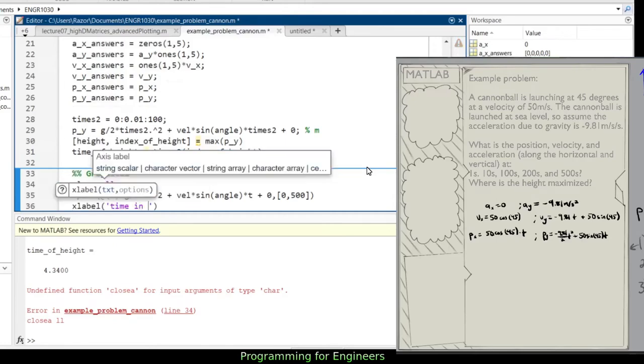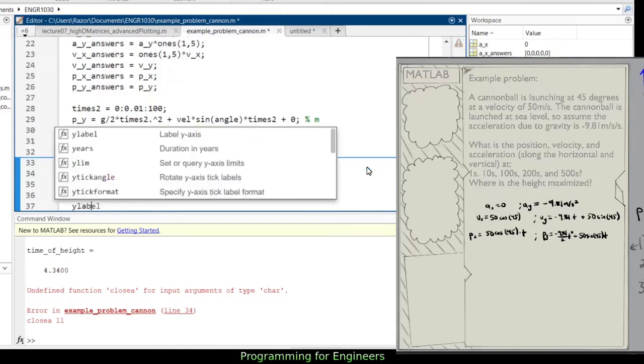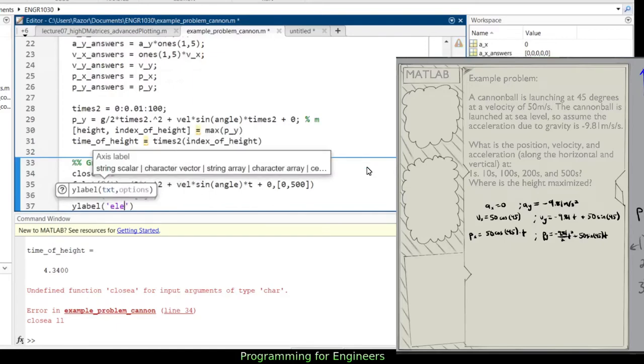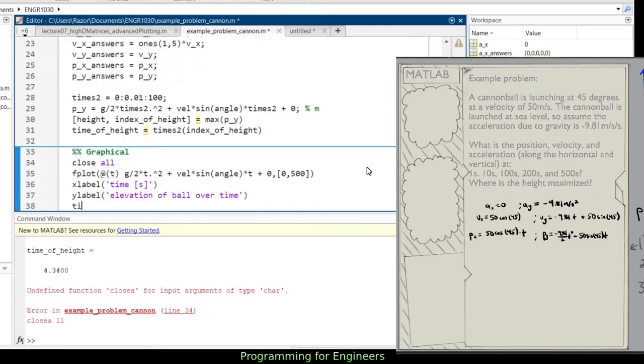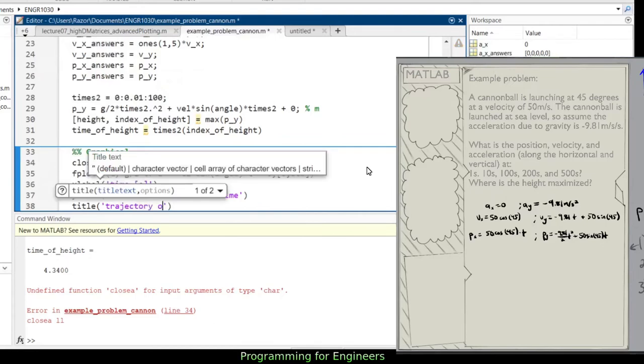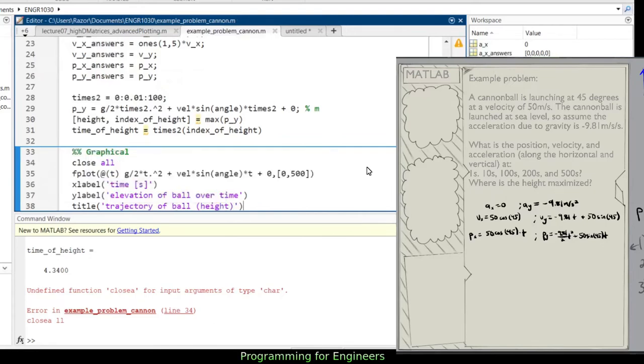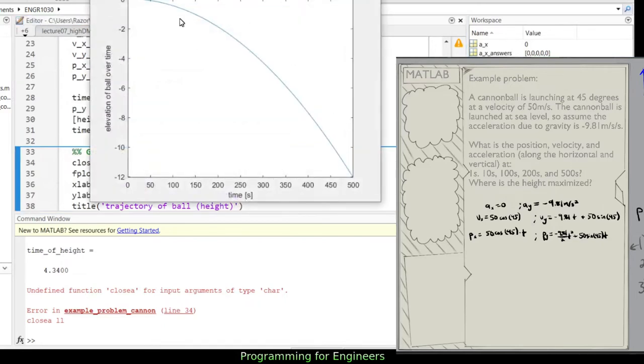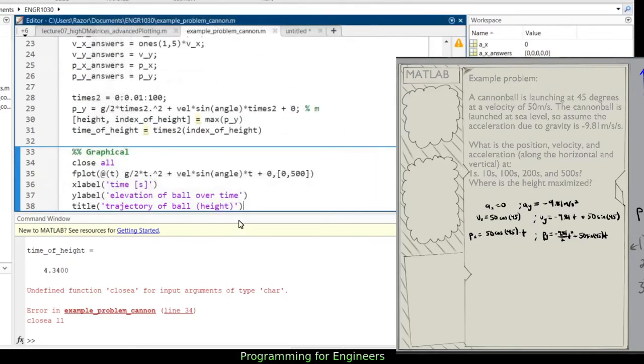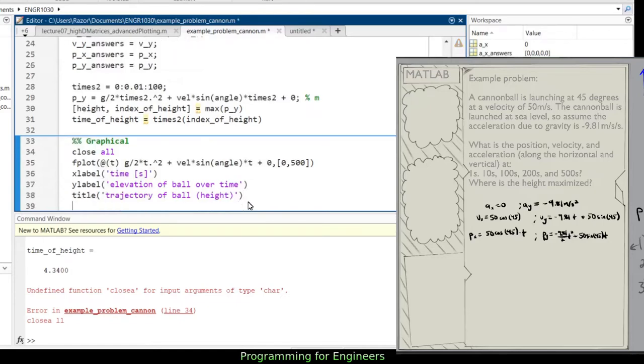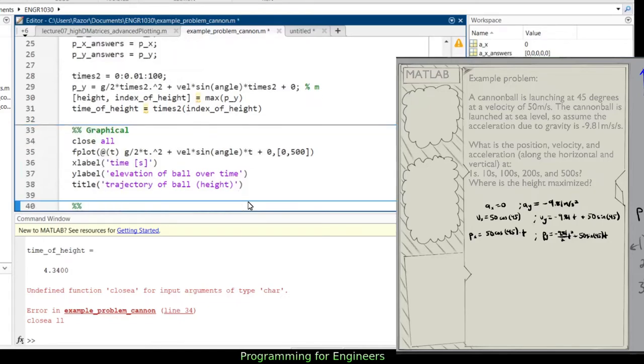So there we go, we have the trajectory from 0 to 500 seconds. So of course, xlabel, this would be time in seconds in brackets, shorthand ylabel, this would be elevation of ball over time, and then title trajectory of ball. So I can pull up numbers from this, and fplot will automatically pick increments. It'll handle some of the nuance there so that I can focus more on looking at specific times and looking at maximum and stuff like that. And now that's graphical. What about symbolic?